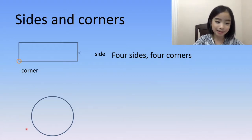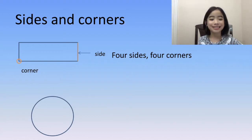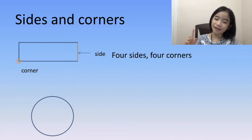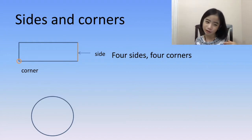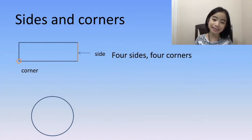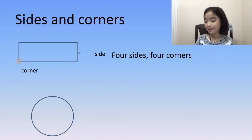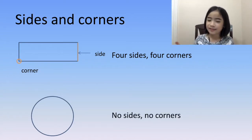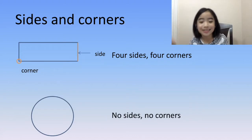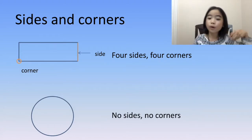Now, let's look at the circle. But there is one problem — it doesn't seem like it has any corners or sides. A circle is a round shape but doesn't have any sides or corners.